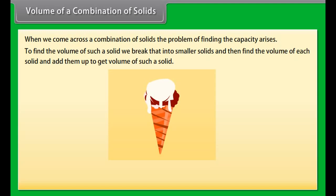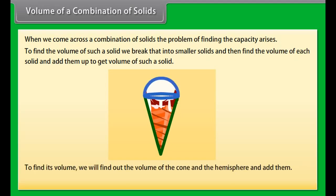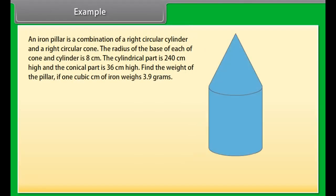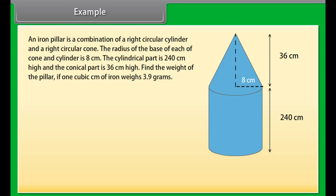Volume of a combination of solids: when we come across a combination of solids, the problem of finding the capacity arises. To find the volume, we break the solid into smaller solids, find the volume of each, and add them up. For example, an ice cream cone is a combination of a cone and a hemisphere. Its volume = volume of cone + volume of hemisphere.